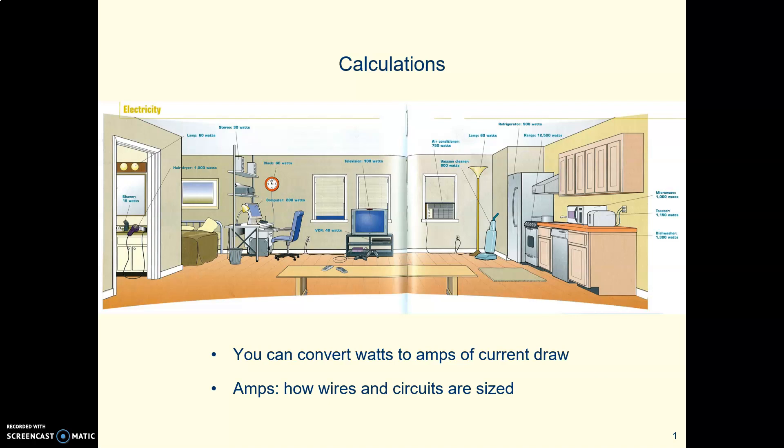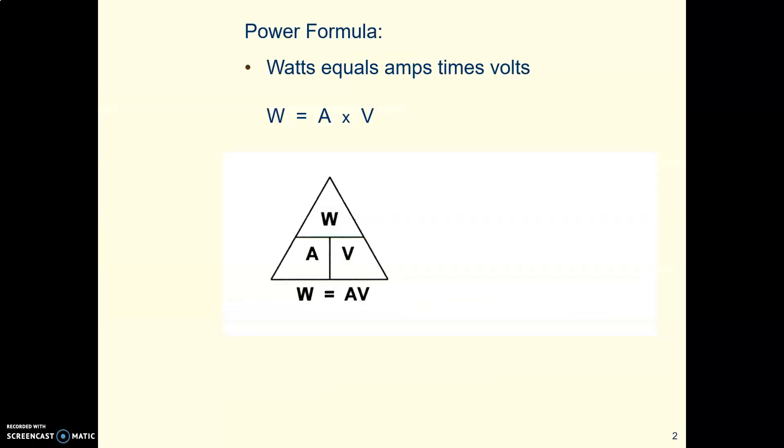We're going to figure out things like how many amps are going through a circuit, and that's really important if you're trying to prevent fire. A formula you can use to figure this out is called the power formula, and you remember that watts is the way we measure power. So here's this handy formula, watts equals amps times volts. What that means is if you know the amps and you know the volts, you can automatically figure out how many watts. If you know any two of these, you can automatically figure out the other one.